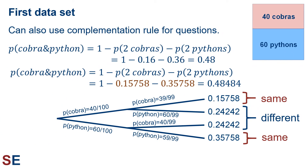We can also use the complementation rule to answer the questions we're interested in. The probability of choosing a cobra and a python is the probability of not choosing either two cobras or two pythons. Because of this, we could subtract those probabilities from 1. If we sampled with replacement, the probability of choosing a cobra and a python would be 1 minus 0.4 squared (0.16) minus 0.6 squared (0.36), giving us 0.48. Alternatively, if we sampled without replacement, it would be 1 minus 0.15758 minus 0.35758, which is 0.48484. You can see that these two probabilities are similar but different because of the different type of sampling being used.